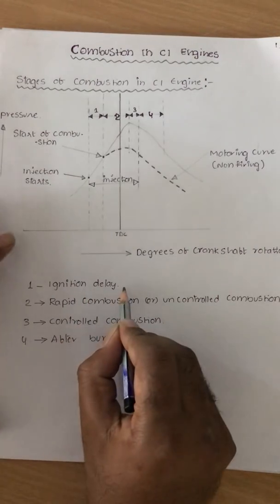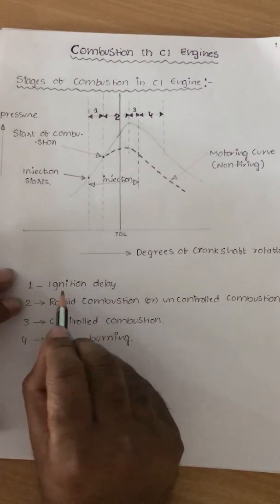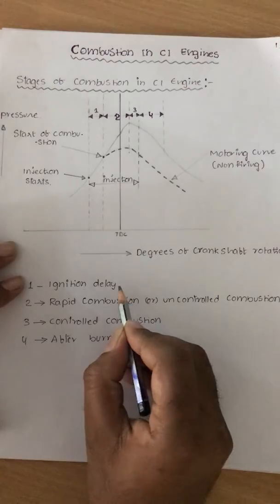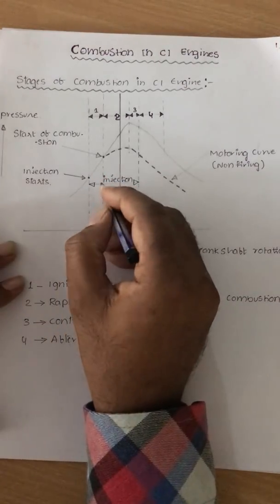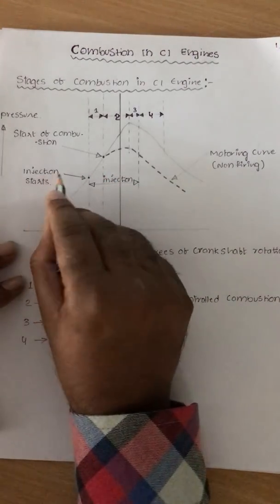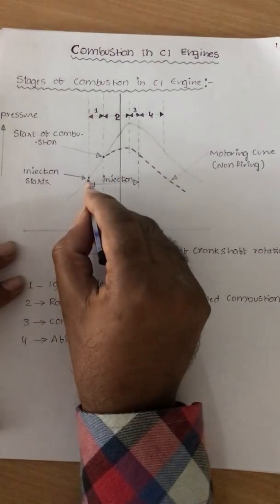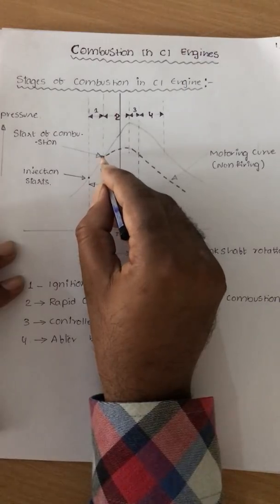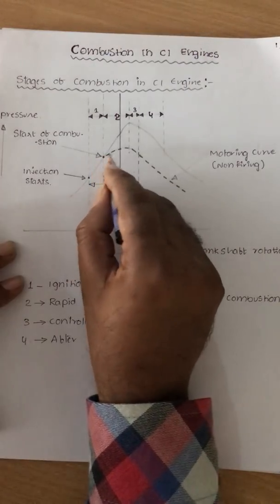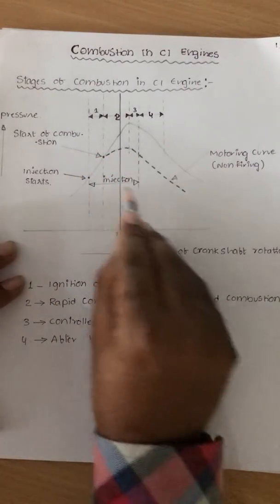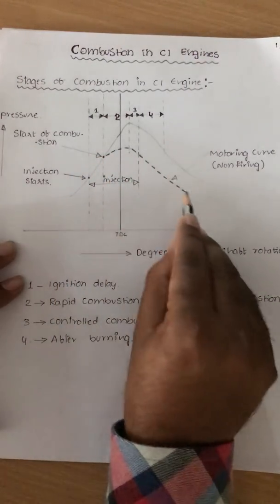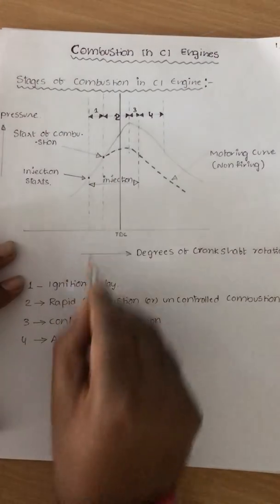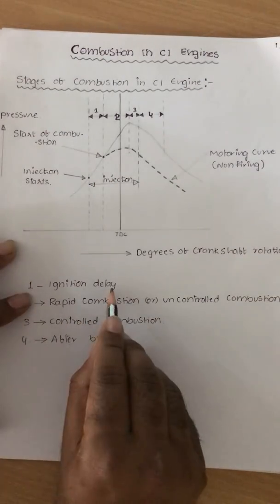The ignition delay period is counted from the point where the injection starts to the point where the P-theta curve separates from the pure compression curve. This is the pure compression curve. That means this period is called ignition delay.